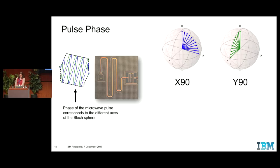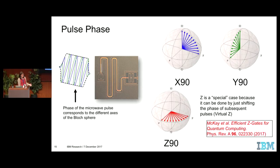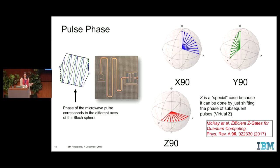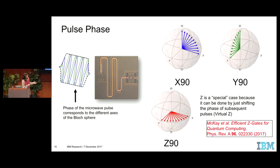How about the Z-gate? The Z-gate is a little bit different — you could look at Dave McKay's paper. It's a special gate where it's just done in software. Going from X-90 to Y-90 is just the change in the angle. So for the phase gate, the way we implement the gate, you could do this in software — it's a virtual Z-gate. This gate for our system doesn't cost any time, so you could think of it as a free gate that you could apply.